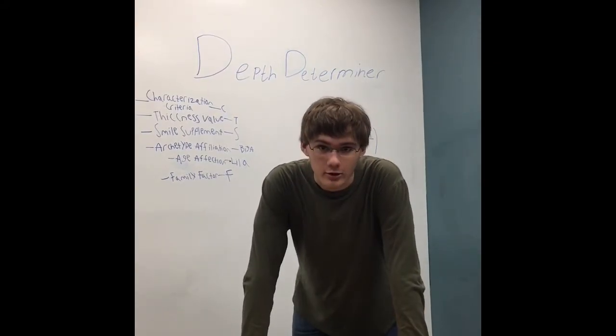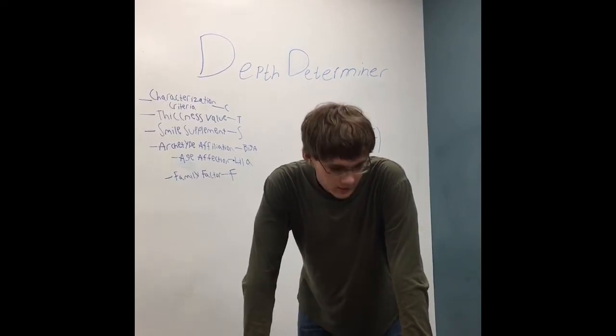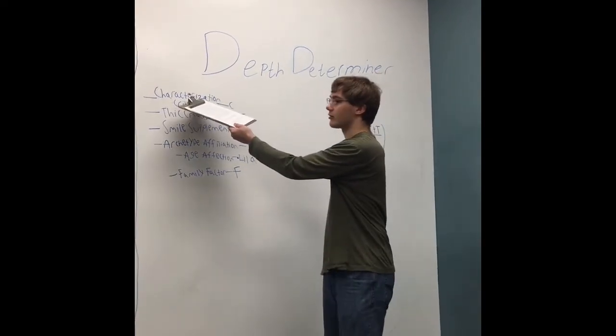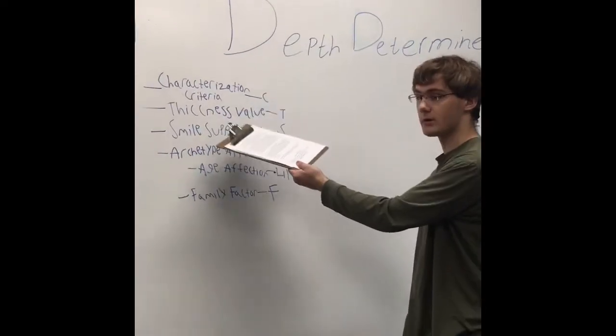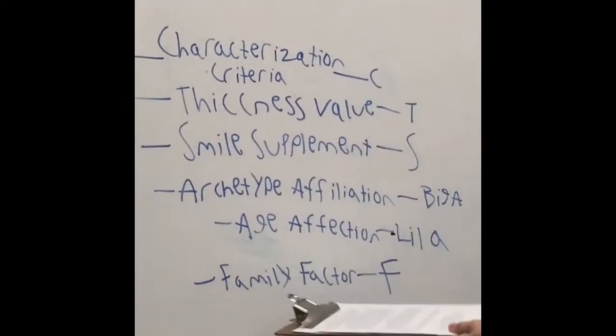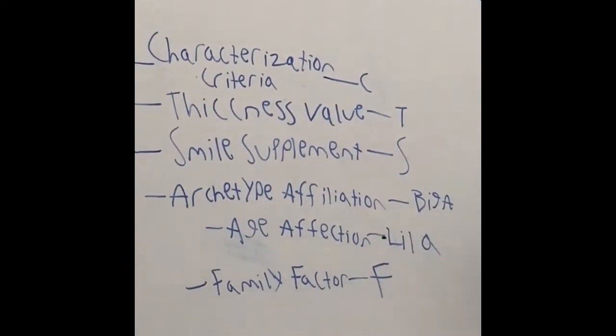Final: depth determiner. The most important and complicated part of the entire formula. This is made up of several smaller factors, known as characterization criteria, thickness value, smile supplement, archetype affiliation, age affection, and family factor, known as C, T, S, big A, little a, and F, respectively.